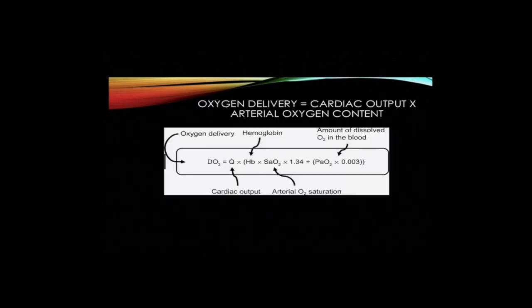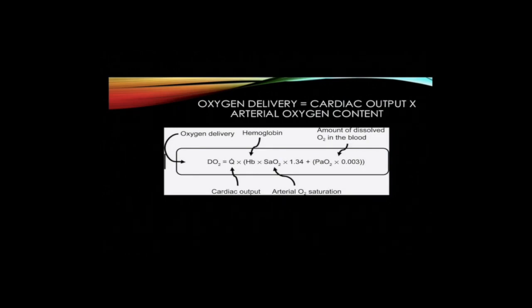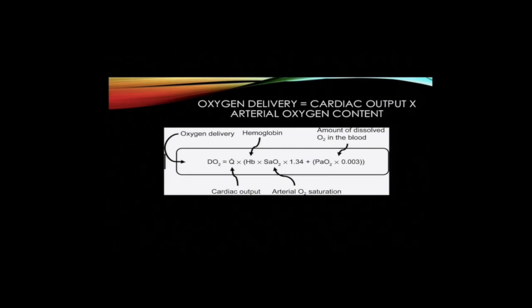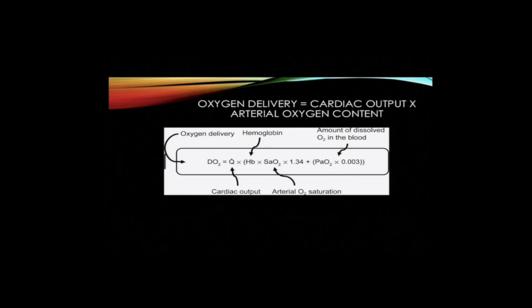Tissue oxygen delivery is dependent upon the complex balance between blood flow and perfusion pressure at both global and local levels. This is represented in the clinical context by two main parameters, namely blood pressure and oxygen carriage. Oxygen carriage is represented by the oxygen flux equation, as shown here, in which cardiac output is a key factor.